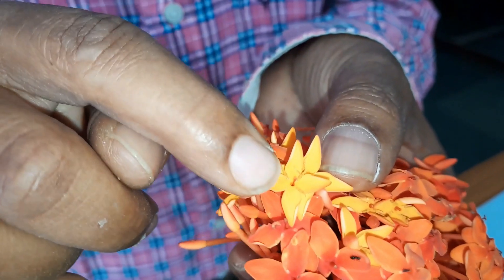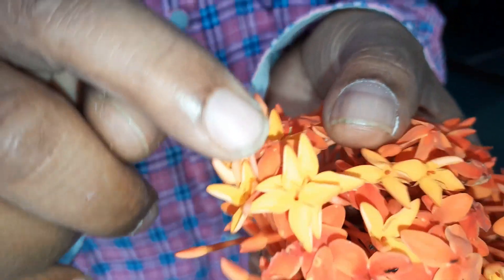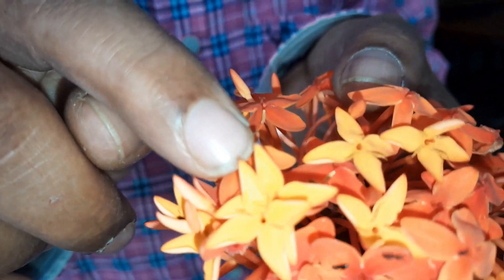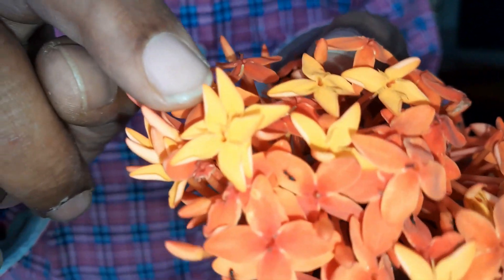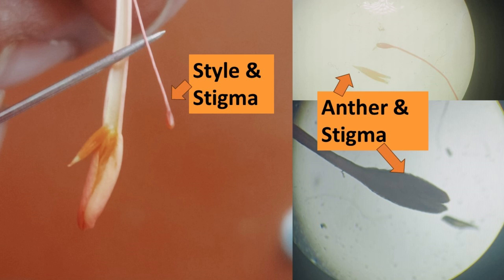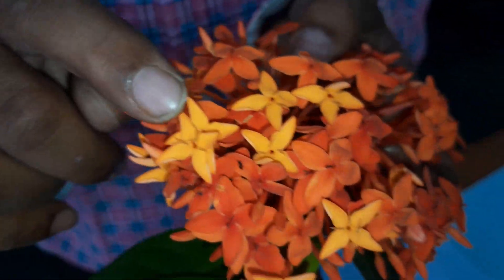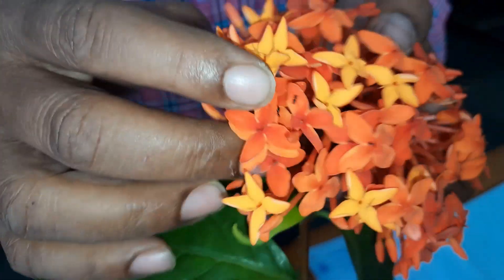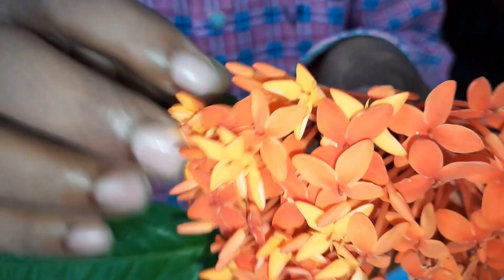You can also see the stigma coming out. There is a style inside the corolla tube. The stigma is not bifid — it is bipartite, split at the terminal region. The ovary, as mentioned, is inferior.